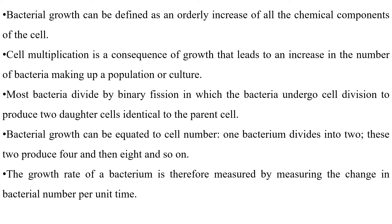In this process, when the cell undergoes division it produces two daughter cells. These two daughter cells are identical to their parent cell. Bacterial growth can be equated to cell number, where one bacterial cell will divide to give rise to two bacterial cells, two cells can produce four cells, four cells can produce eight bacterial cells, and so on. We can measure the growth rate of a bacterium by measuring the change in bacterial number per unit time.